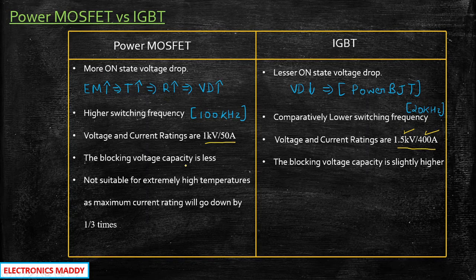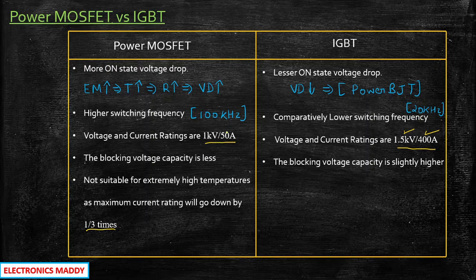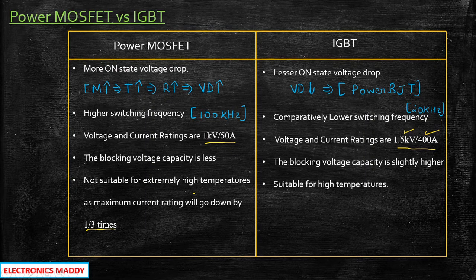Power MOSFETs are not suitable for extremely high temperatures. The reason is that the maximum current rating will go down to one-third of the overall defined current rating. For example, if the power MOSFET is set to operate at 50 amperes, the current rating will be drastically reduced by a factor of 3 at maximum temperature. Whereas in the case of IGBT, it is suitable for high temperatures and is preferably used for high temperature applications.